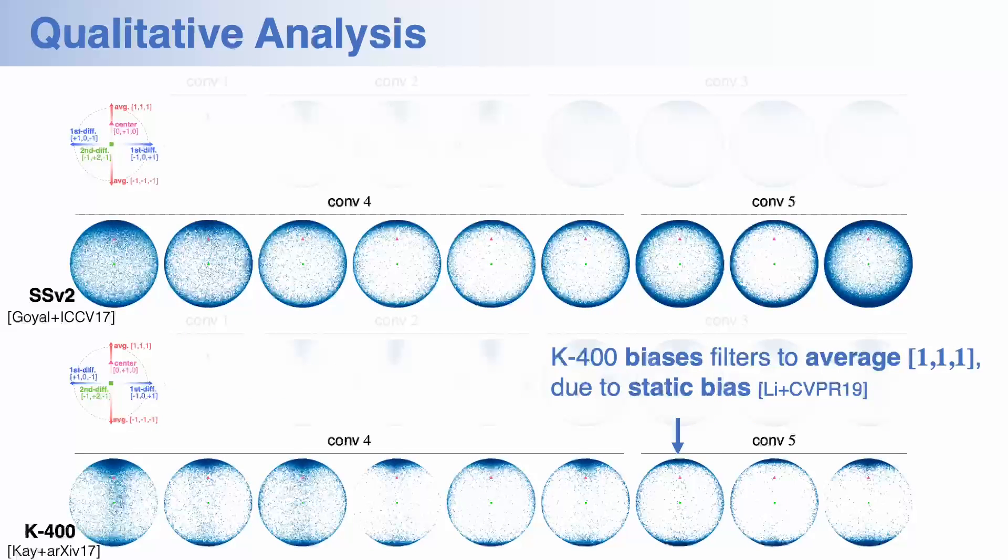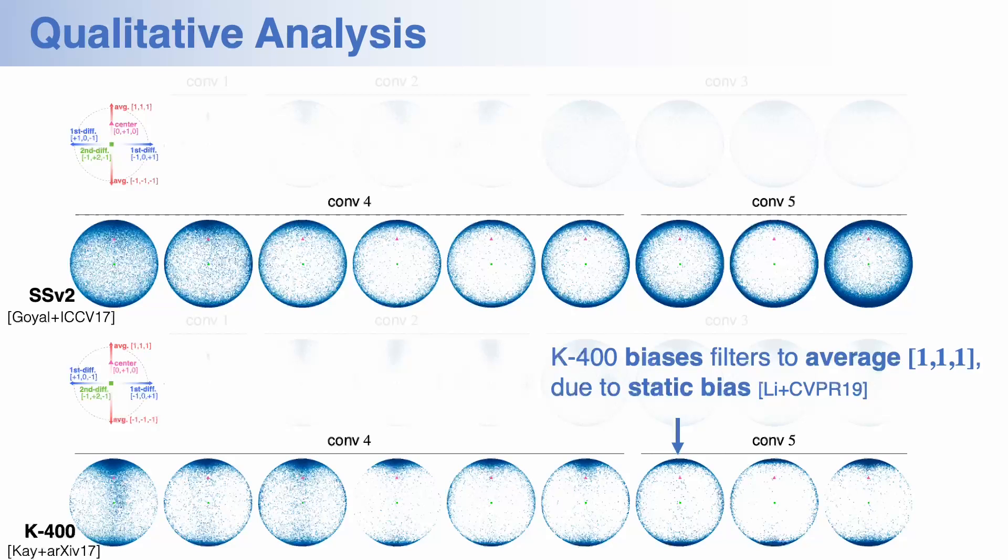On the other hand, we can also find that the distribution on Kinetics dataset exhibits different patterns from the something-something one. In the Kinetics dataset, the distribution is biased toward averaging feature, which is just averaging frame features without paying any attention to temporal dynamics. It is related to the so-called static bias, which is pointed out in previous works. This filter analysis reveals the dataset bias from a statistical viewpoint based on distribution of temporal filters.